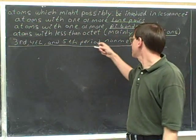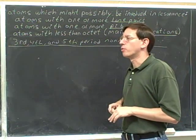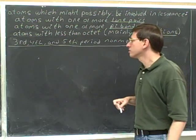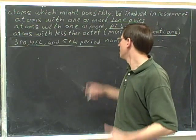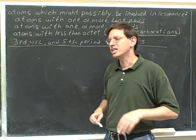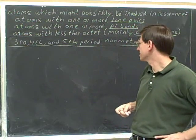If you're a third, fourth, or fifth period non-metal, you can also be a candidate for resonance, even if you don't fall into any of these other categories. So basically these are non-metals from the third period and beyond. Even if they don't have any of the first three characteristics, they can still be candidates for resonance.